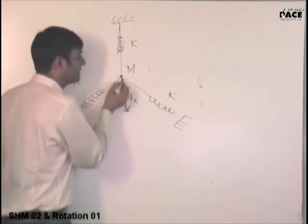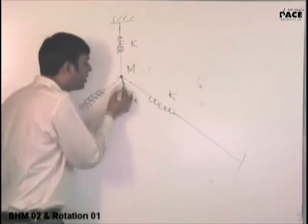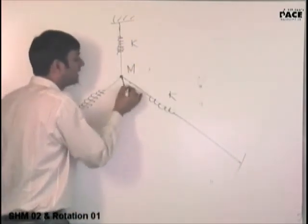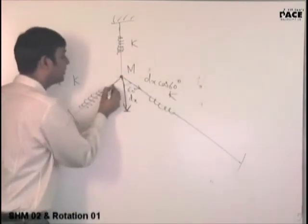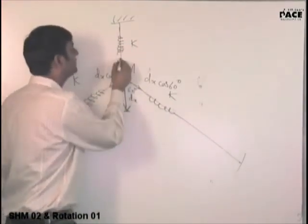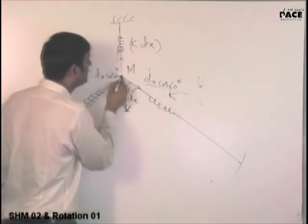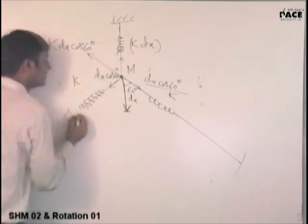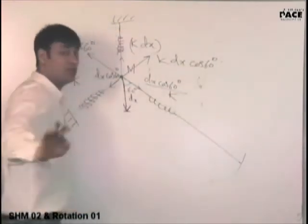dx cos 90. So earlier the component along this direction when they were at 90 degrees was 0. If I just take this - I assume that this is a large spring, I mean large length. And when I do a small displacement, the string almost remains parallel to itself. So the component of dx along this direction - this angle is 60 degrees - will be how much? dx cos 60. And the component along this will be dx cos 60.